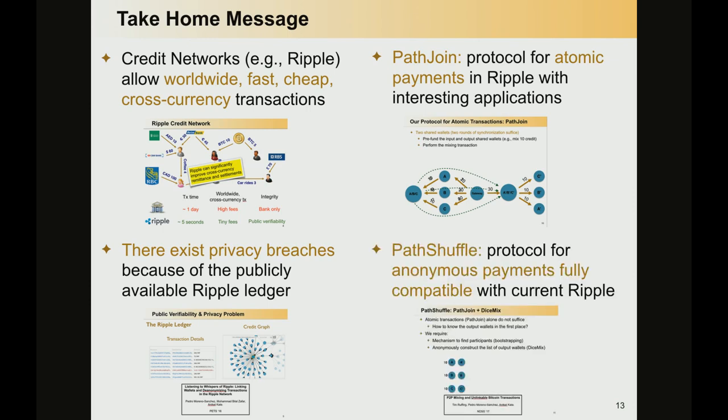And finally, if we combine PathJoin with DashMix, we have PathShuffle — a protocol for anonymous payments in Ripple today that is fully compatible with the current network. With that, I would like to thank you for your attention and answer your questions.